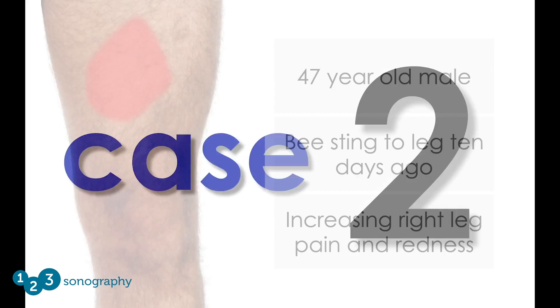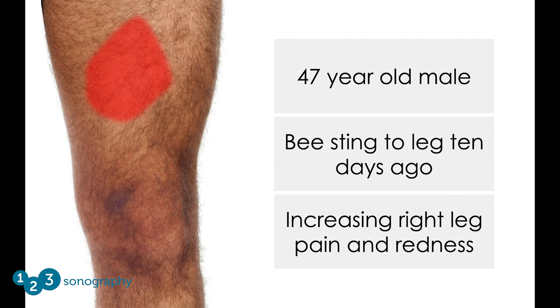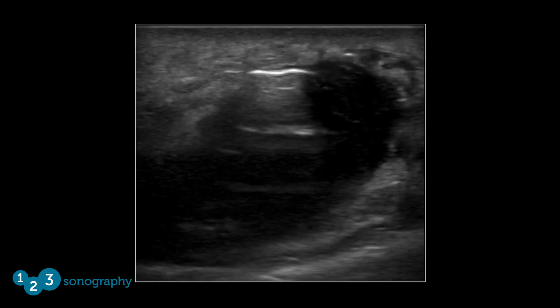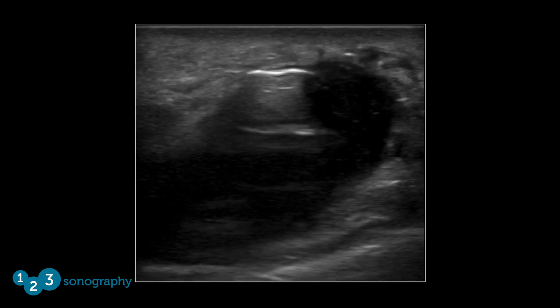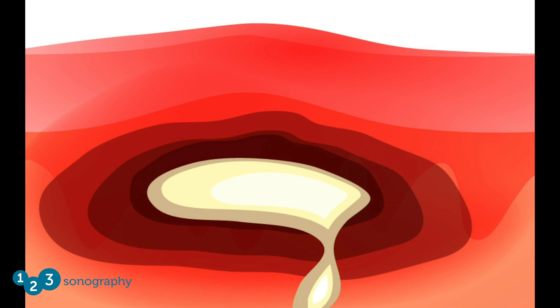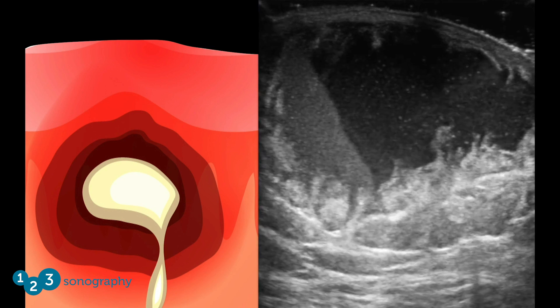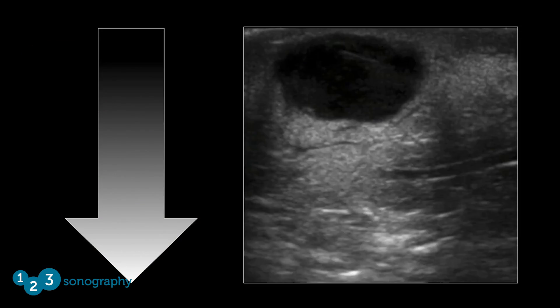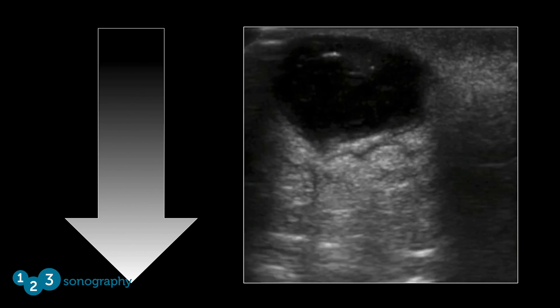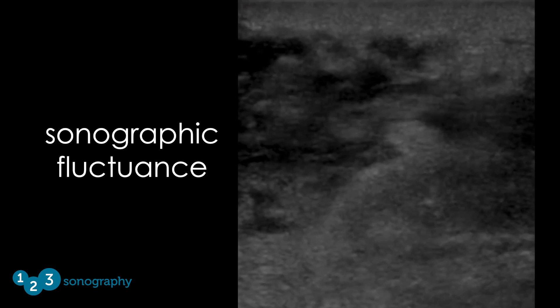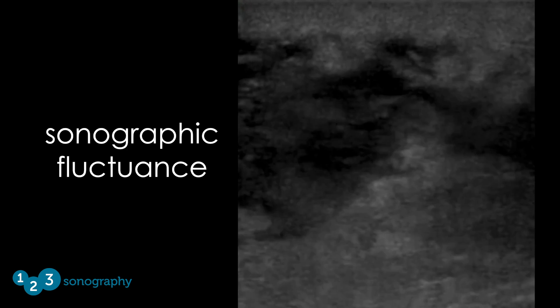Case number two: a 47-year-old male stung in the thigh by a bee ten days ago, with increasing pain and tenderness around the sting site. As you scan the area, you see evidence of cobblestoning. However, you also find a relatively large area with mixed echogenicity — this is the classic ultrasound image of an abscess. An abscess demonstrates a heterogeneous image made up of both solid and liquid components. Because of the fluid in the abscess, most will create posterior acoustic enhancement. With compression, the fluid will move between areas of the cavity, a finding referred to as sonographic fluctuance.